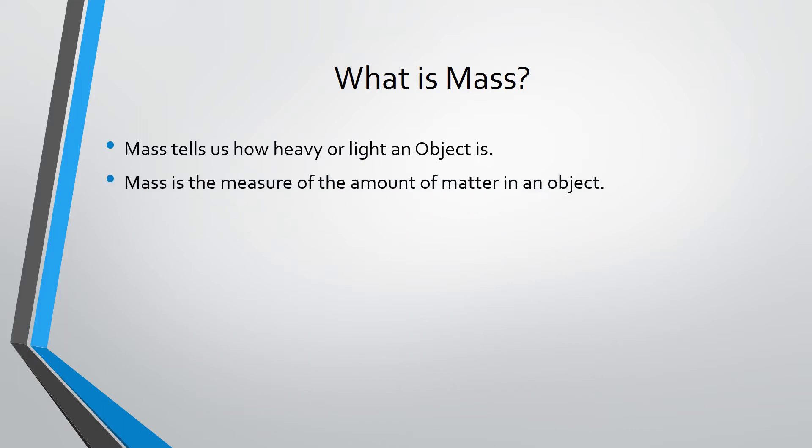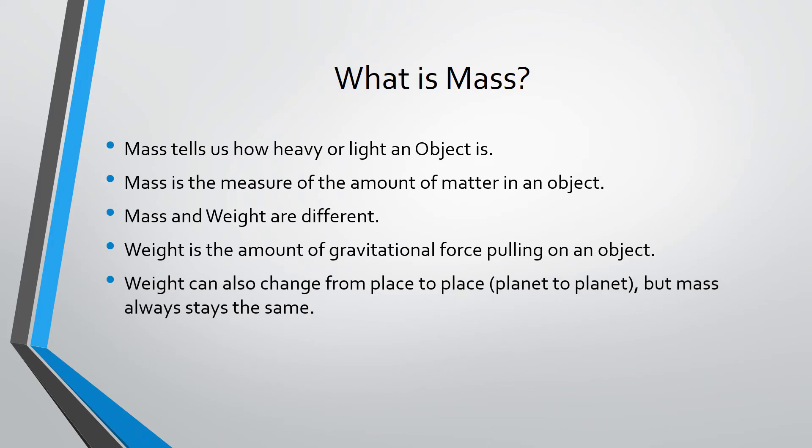Mass is the measure of the amount of matter in an object. Mass and weight are different. Weight is the amount of gravitational force pulling on an object. Weight can also change from place to place, planet to planet, but mass always stays the same.